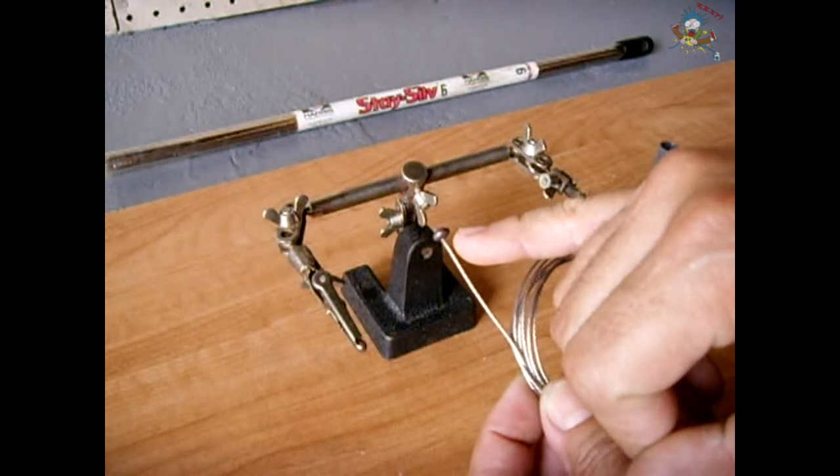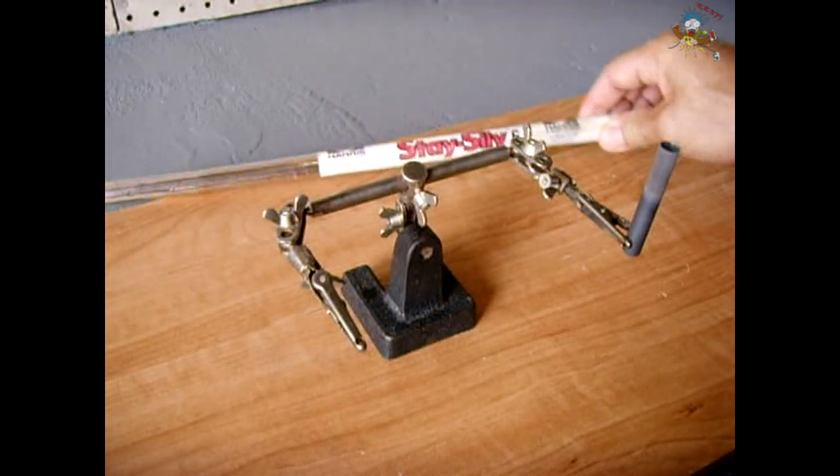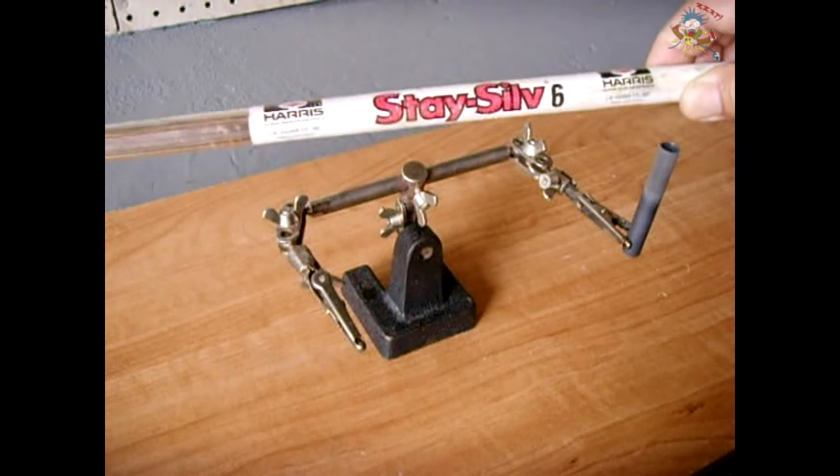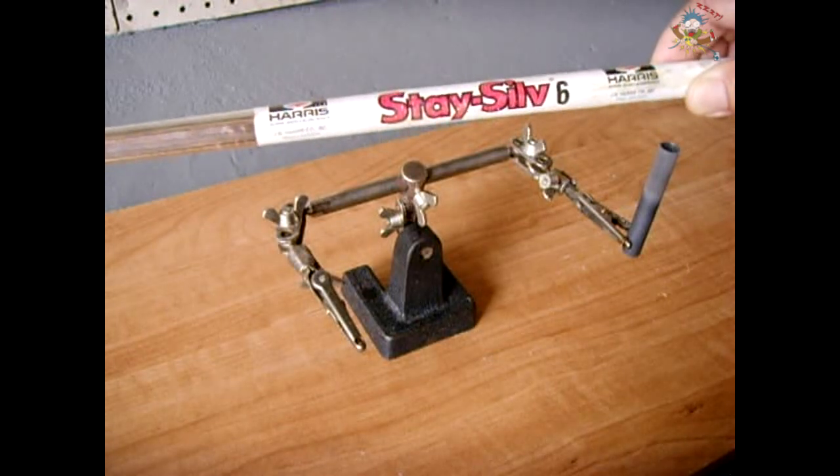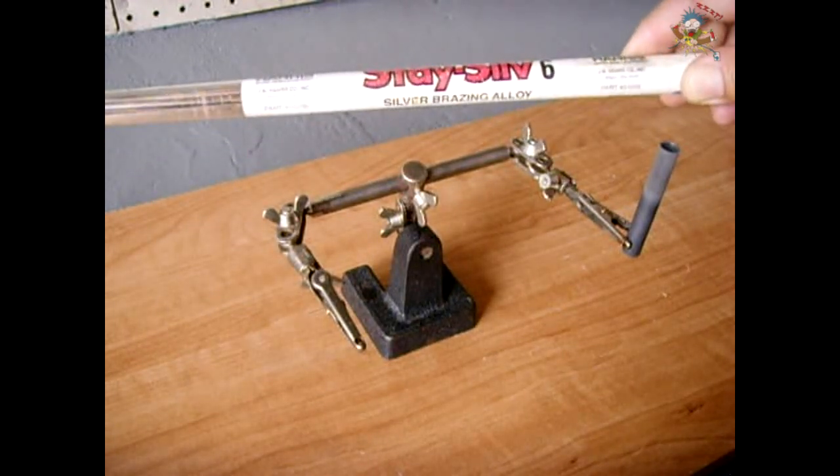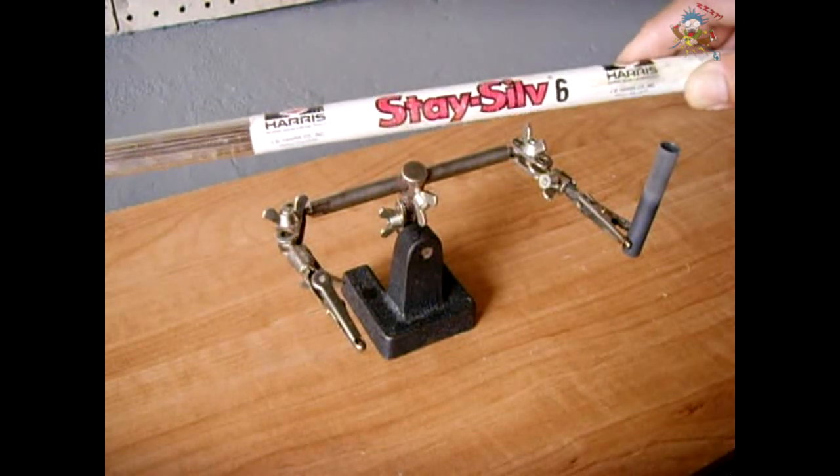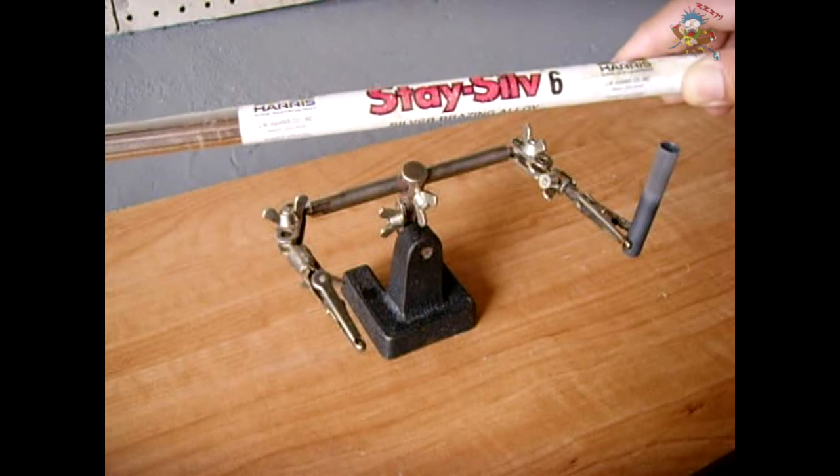The material that I used to melt around the end of the cable is this brazing rod made by Harris. It's Stay-Silv 6, six percent silver. This is available up to fifteen percent silver for added strength. This is the exact same brazing rod that I used when I installed central air systems. It's very strong stuff.